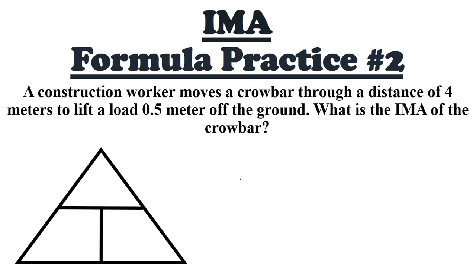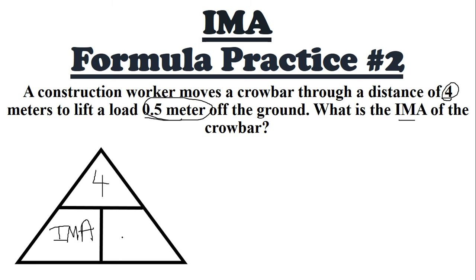Second practice — pause and see if you can figure it out. A construction worker moves a crowbar a distance of 4 meters to lift a load 0.5 meters off the ground. What is the IMA of the crowbar? We're trying to find IMA, so we leave that in the triangle. At the top goes the input — what the person does — 4 meters. The output is what the machine does — 0.5 meters. When you do 4 divided by 0.5, you get 8 IMA.